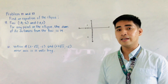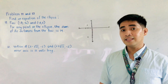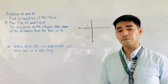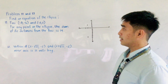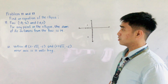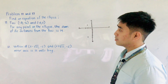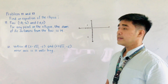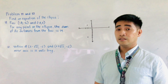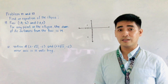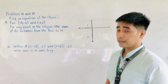So let's now try to answer the continuation of finding an equation of an ellipse if we are given different conditions. Example number 11: find an equation of the ellipse. The first condition is that the foci are located at negative 3, negative 6 and negative 3, positive 2.